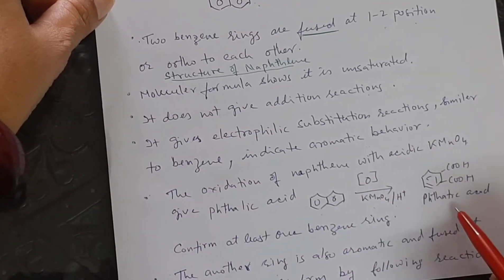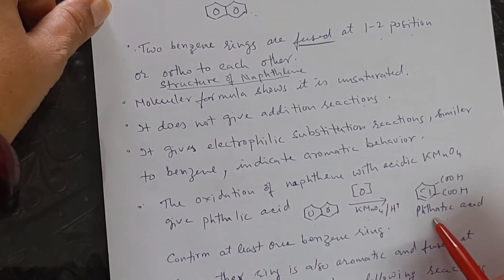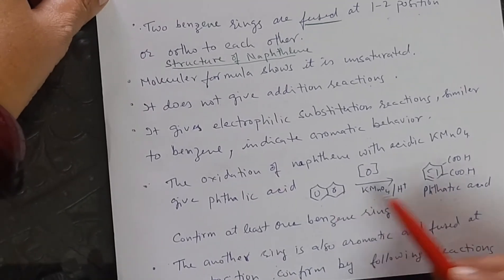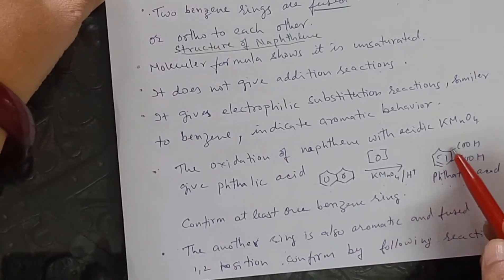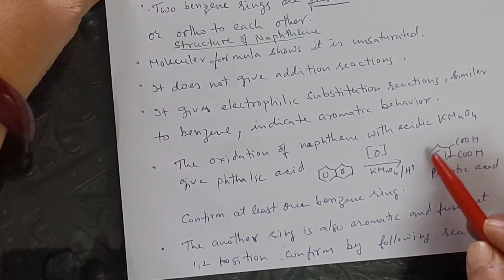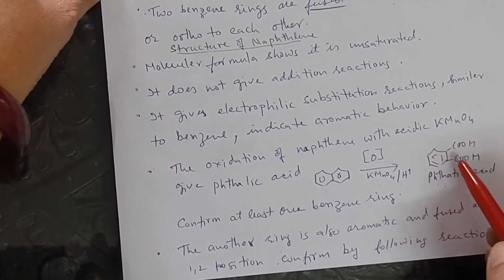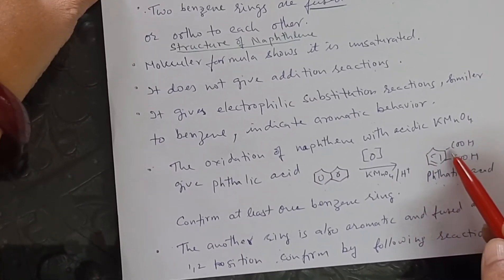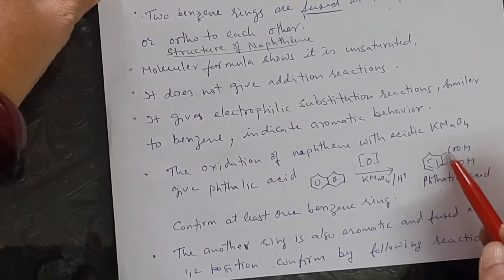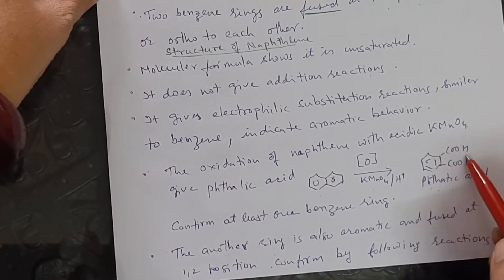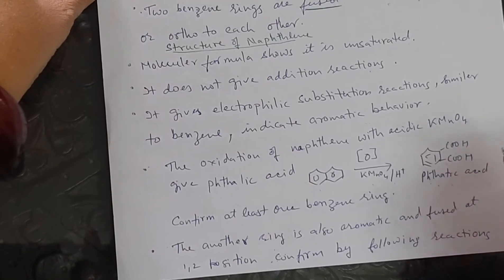The formation of phthalic acid from naphthalene shows that it has at least one benzene ring. And the other ring is fused at 1 and 2 position because the 2 carboxyl groups are ortho to each other.